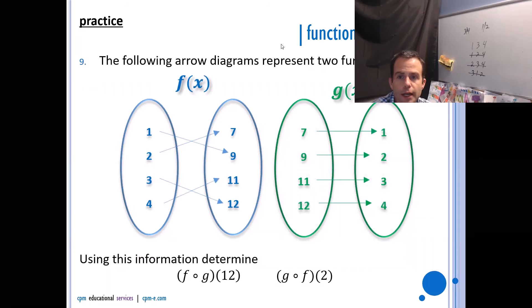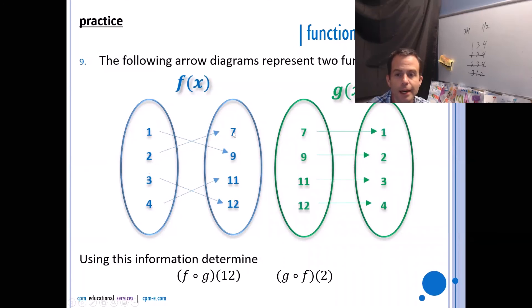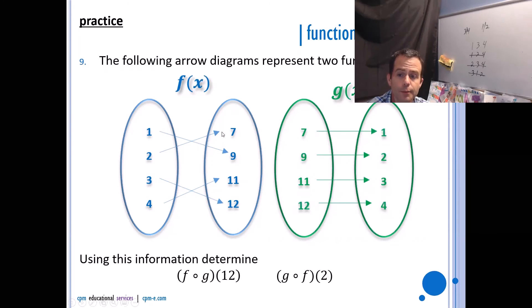Arrow diagrams represent two functions. Find f(g(12)) and g(f(2)). For f(g(12)): first g(12) = 4, then f(4) = 11. For g(f(2)): first f(2) = 7, then g(7) = 1. The inputs arrow to their specific outputs in each diagram.